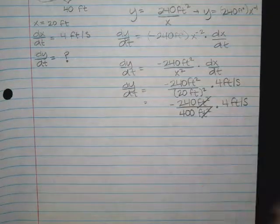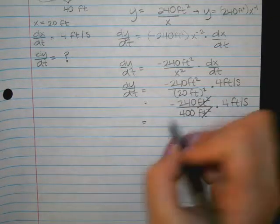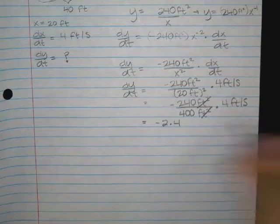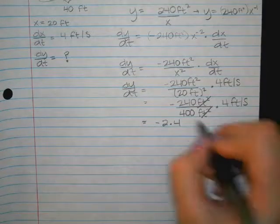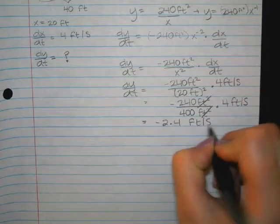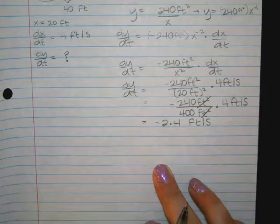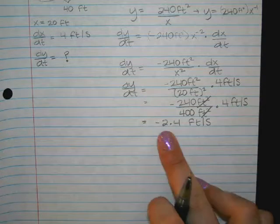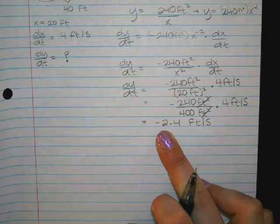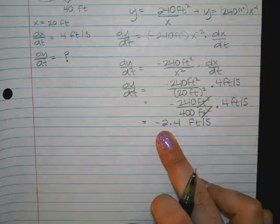I'm showing my work because I want you guys to see how the units are working out. So what happens with this feet squared and that feet squared? They cancel. Okay, so Nancy, you said you plugged it all in. Yeah, what'd you get? Negative 2.4. Negative 2.4, and what are the units? Feet per second. So what was that saying about his shadow?